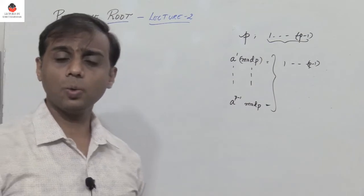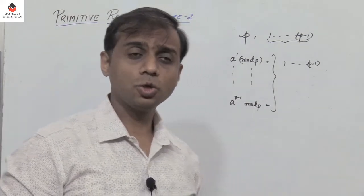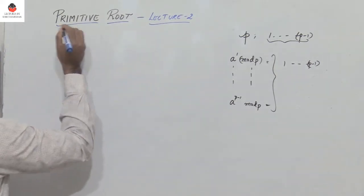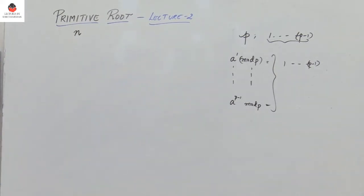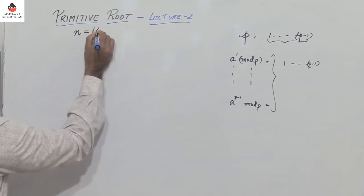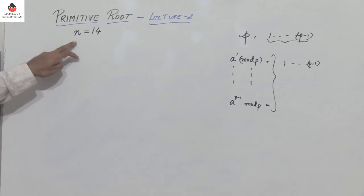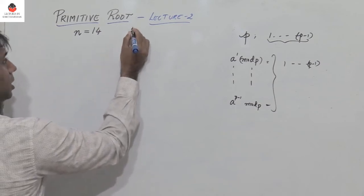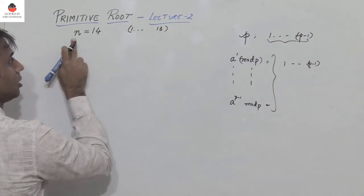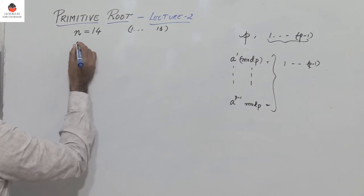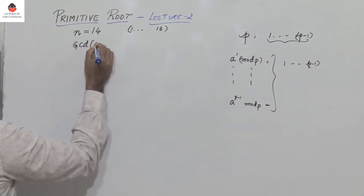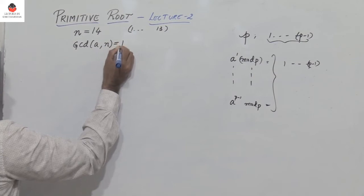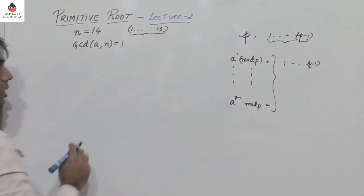Now there were a number of requests for me to take an example and show the same for a given number n where n is not a prime number. So let's consider n equal to 14. Now n is not prime — 14 is not a prime number. So first find all the numbers which are relatively prime to 14. That means find numbers from 1 to 13 which are relatively prime to 14, or the GCD of a comma n should be equal to 1, where a lies between 1 and 13.